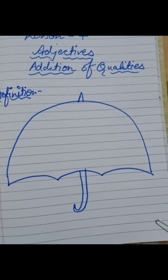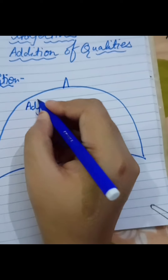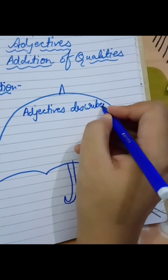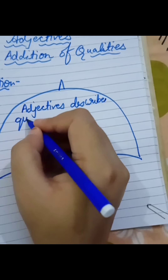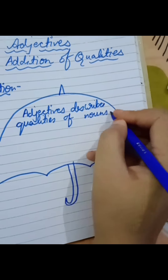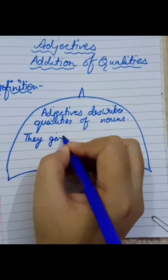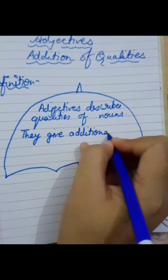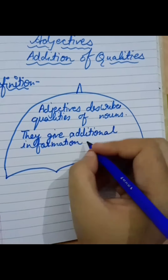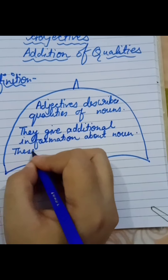Firstly, we will write the definition in umbrella shape. The definition of adjectives: adjectives describe qualities of nouns. They give additional information about nouns.